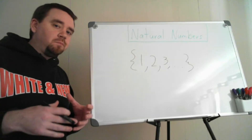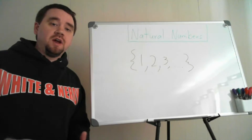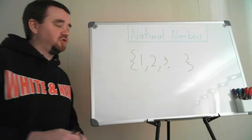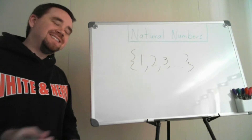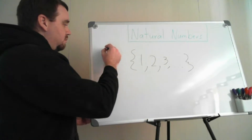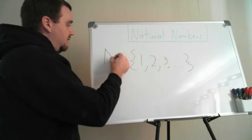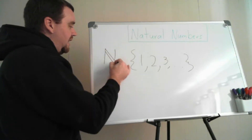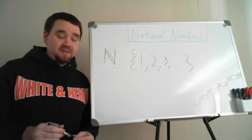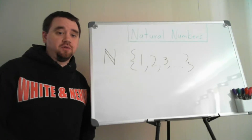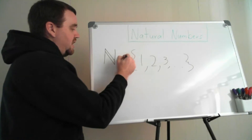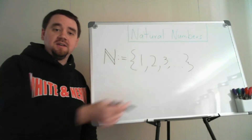When we print the set of natural numbers, we use a bold capital N. When writing by hand, it's not easy to do bold, so we use another method: we start with a capital N and double the middle stroke. We define the set of natural numbers to be equal to that set.